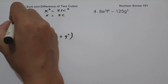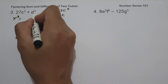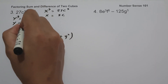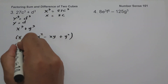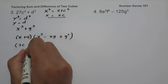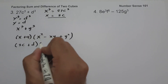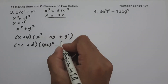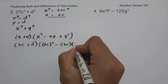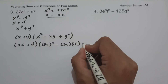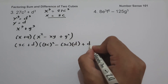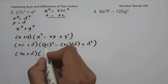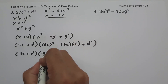Then y³ is the last term, d³. To find the value of y, the cube root of d³ is d. So we have x + y, which is 3c + d, and then x² is (3c)², minus x times y is 3c times d, plus y² is d².